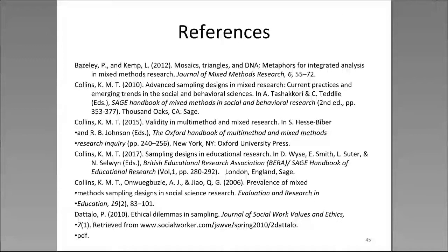Another question from Sophia: 'Any idea on the citation for the Johnson grounded theory article?' Kathleen replied: I'm drawing a blank on the year, but I believe it was published in the Journal of Mixed Methods Research — go to the JMMR website and search for 'Burke Johnson' within the journal. If not there, try Google Scholar.